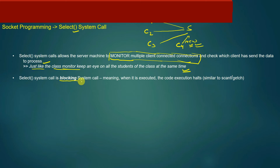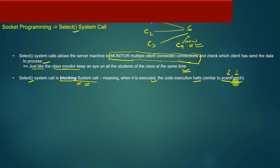The select system call is a blocking system call. When the server calls select, the execution halts — similar to how functions like scanf or getch halt program execution when called. Such calls are called blocking system calls, and select is one such blocking system call.